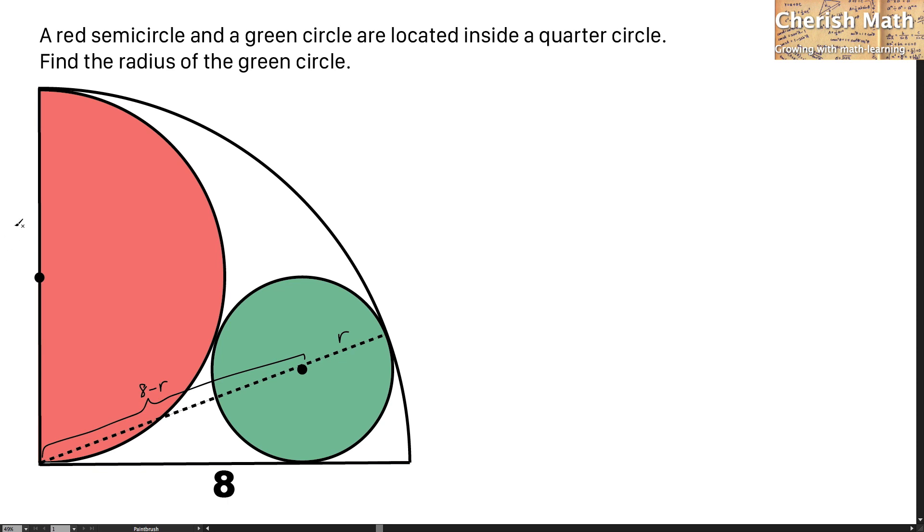The radius of the semicircle is 4 units. I got it simply by using 8 divided by 2, and I got half of the radius for the quarter circle, which is the radius of the semicircle.